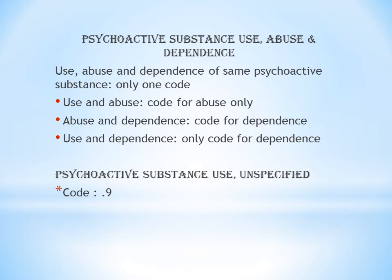When use and abuse are both documented for the same substance, code for abuse only. For example, if a patient has both alcohol use and alcohol abuse documented, assign only the alcohol abuse code — do not code alcohol use separately.